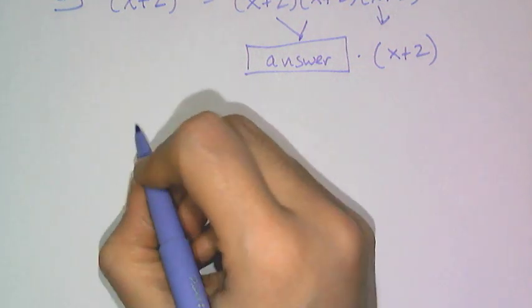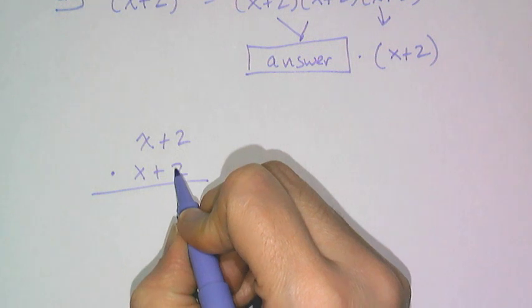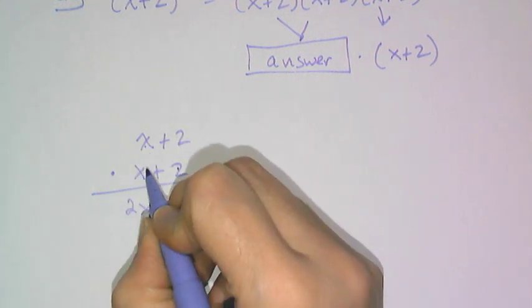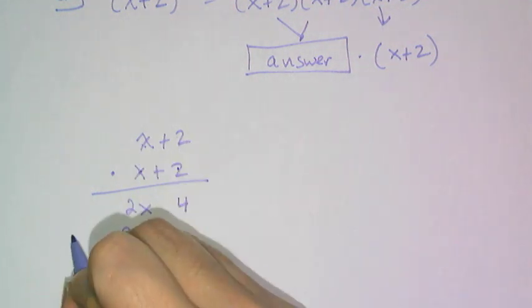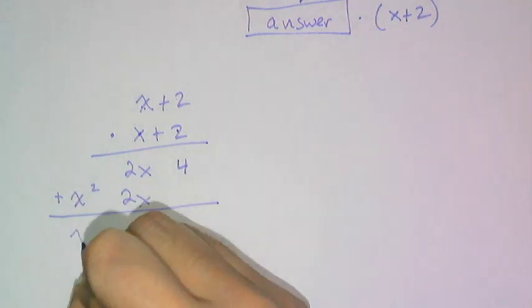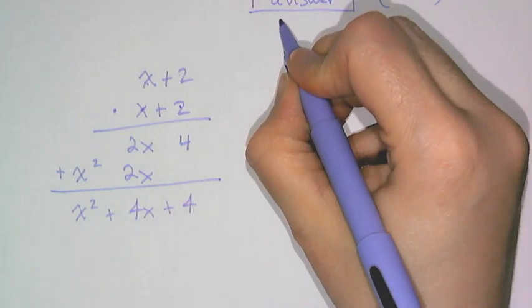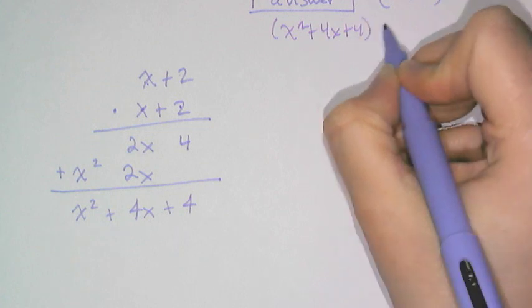I'm going to go ahead and multiply these two together first using the Leo B method. 2 times 2 is 4, 2 times x is 2x, x times 2 is 2x, x times x is x². So now I'm going to add all these terms together, I get x² plus 4x plus 4. So that's what goes here: I have x² plus 4x plus 4 and I have to multiply it by another (x+2).